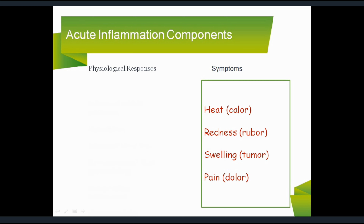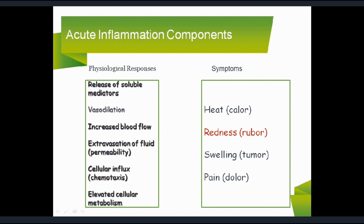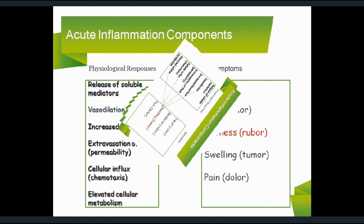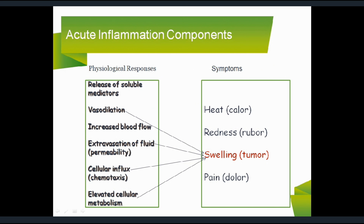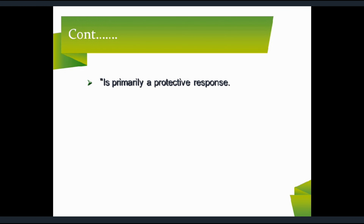Why do these occur — due to some physiological responses. Heat occurs due to increased blood flow and elevated cellular metabolism. Redness occurs due to vasodilation and increased blood flow. Swelling occurs due to all together, and pain is due to chemical mediators. It is a primary protective response.